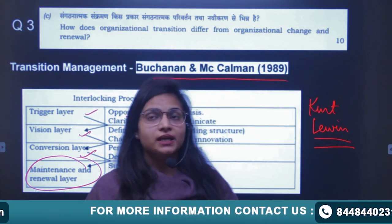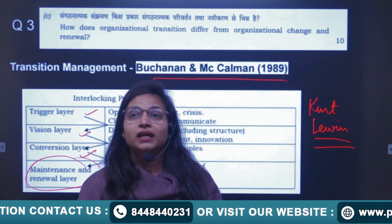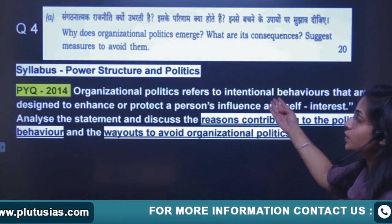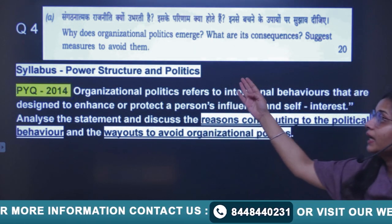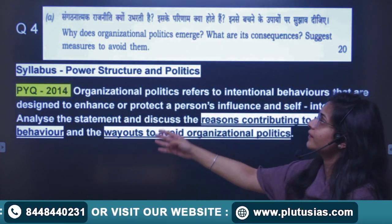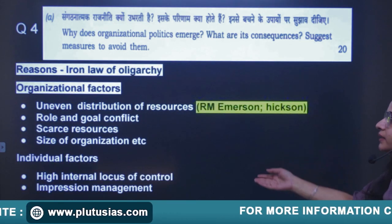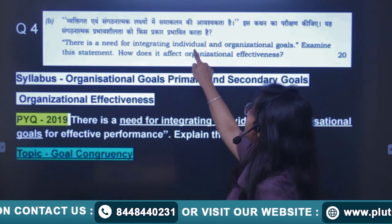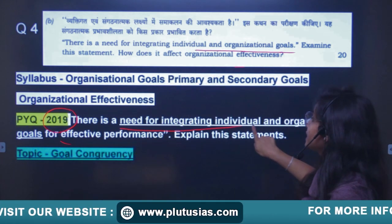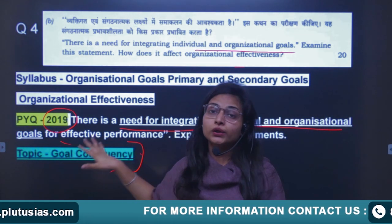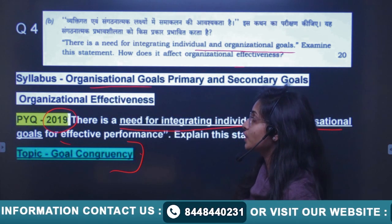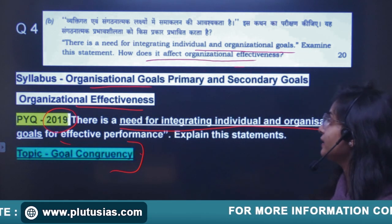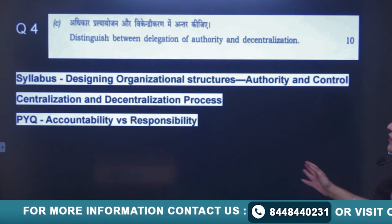Moving to Question 4: power structure and politics — the same question appeared in 2014 as 'reasons contributing to political behavior,' and the same question appears in 2024. You need to make use of small thinkers here. Then, need for integrating individual and organizational goals — same question in 2019, the topic being goal congruency. The syllabus mentions organizational goals and organizational effectiveness, interlinking the two. If you prepared the 2019 question, you can obviously write it.